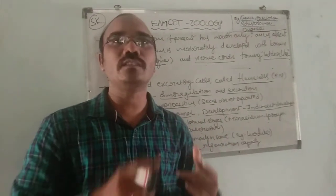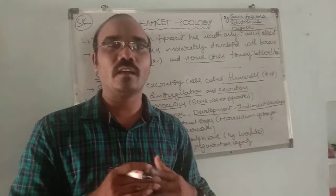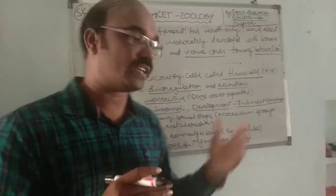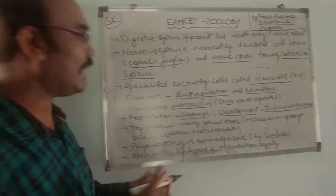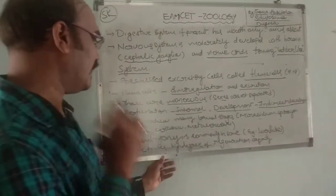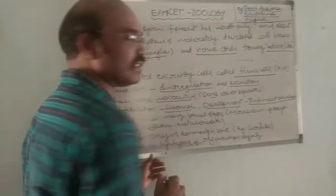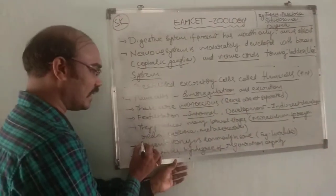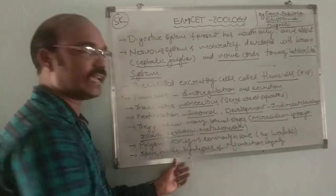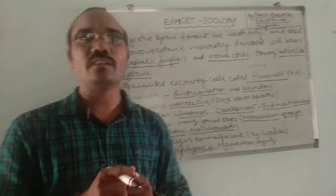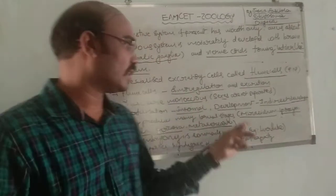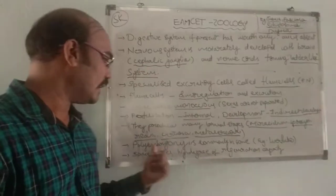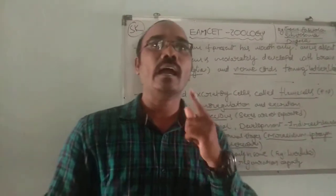They show indirect development and produce more than one larval stage in their life cycle. Especially in flukes, they produce many larval stages like: Miracidium, Sporocyst, Redia, Cercaria, and Metacercaria. In the life cycle of the liver fluke, these multiple larval stages are clearly observed.